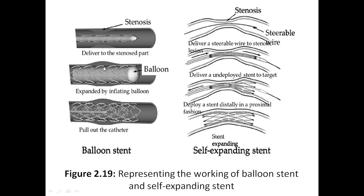Once it is expanded, you pull out the catheter and remove it. Now only the stent will be remaining there. This will give you the mechanical strength. That is about the balloon stent.